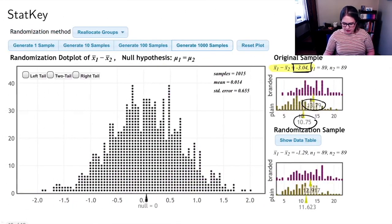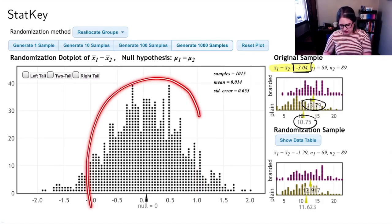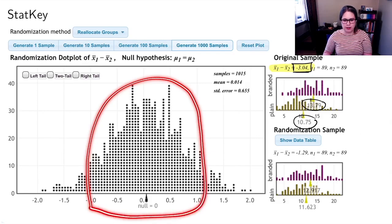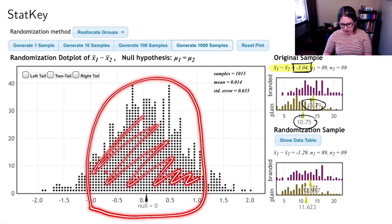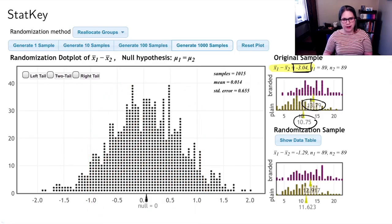If I go back to this plot, a lot of the times if the null were true, I would find a difference in means about zero. Sometimes I'd find one where either the branded or the plain tape was a day or half a day longer or shorter. Sometimes it would go out to a day shorter or longer. If I was using my 95% rule and kind of eyeballing it, I might say this looks like the middle 95%. If the null hypothesis were true, most of the time it would be in this region. You'd have a difference of plus or minus a day for either one of the types of packages.